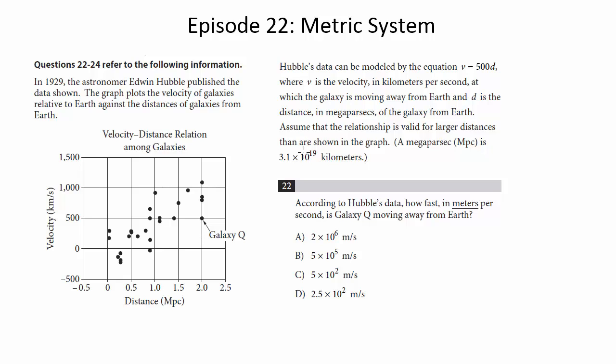Question 22: according to Hubble's data, how fast in meters per second is galaxy Q moving away from Earth? So we want to find galaxy Q on our table here, and we see it's at this point. It's at a distance of 2 megaparsecs, but importantly for us, it's at a velocity of 500 kilometers per second.